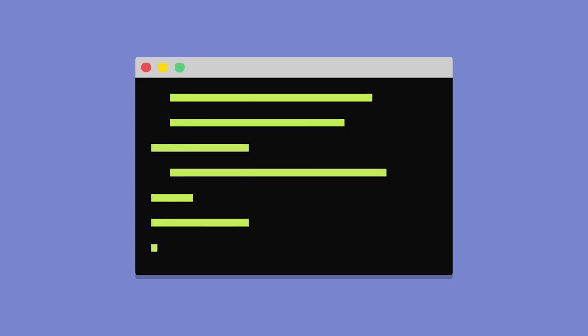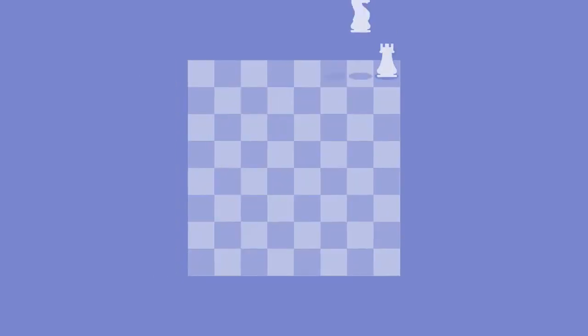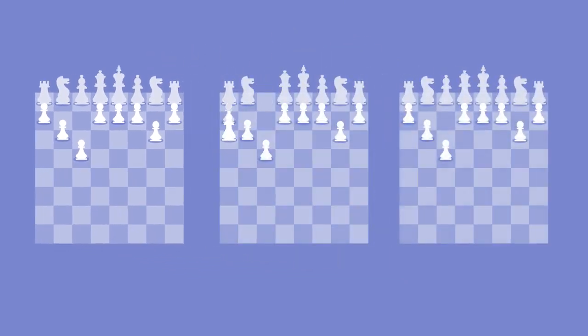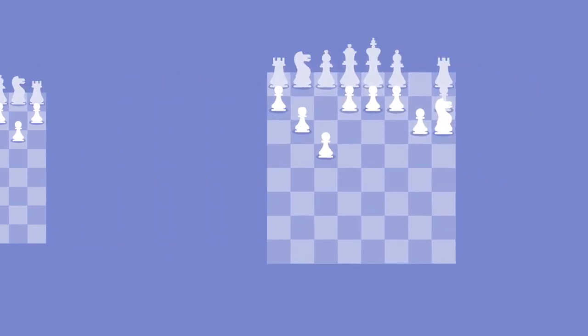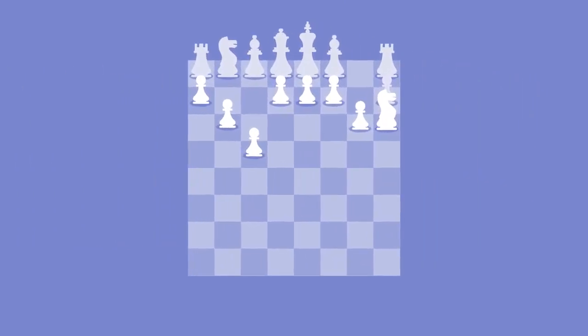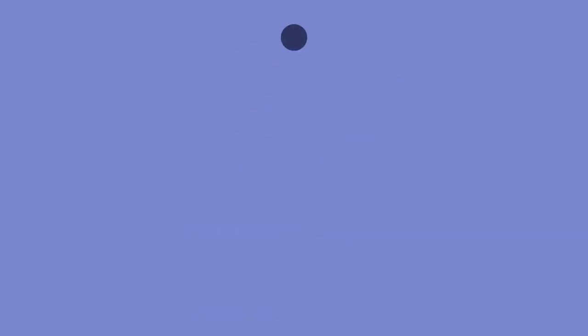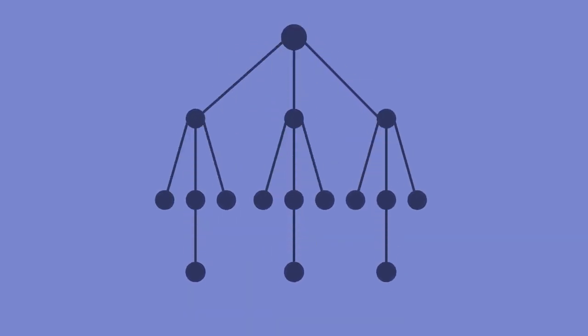I'm oversimplifying, but in essence, Deep Blue would look at many branching chess moves into the future, far more than a human can do, and it would pick the best one based on a complicated set of predefined criteria. This type of approach only had the appearance of intelligence, when in reality, most AIs could be distilled down to a giant flowchart created by people. And more importantly, Deep Blue could only play chess.